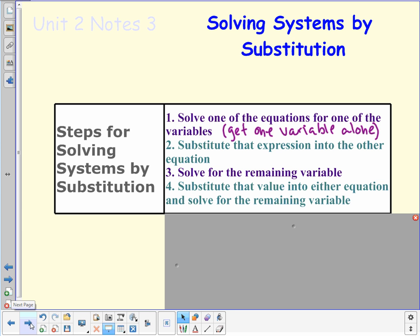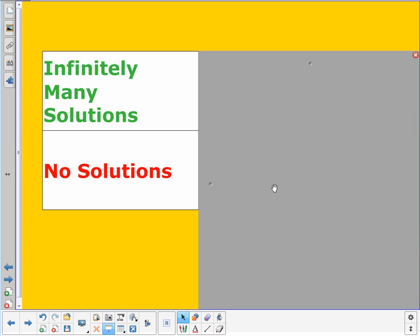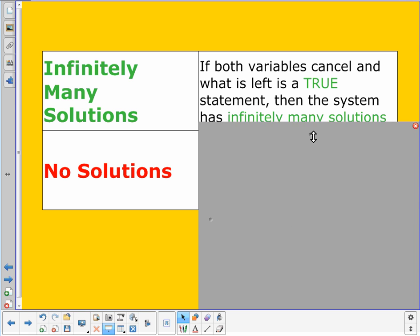One thing to consider is that we know we have that possibility of infinitely many solutions and no solutions. We saw that with graphing and it was really easy to see when we had a picture of it on a graph, but what does it look like algebraically? Well, algebraically, if both variables cancel out, if both variables drop out and what we have left is a true statement, then the statement has infinitely many solutions.